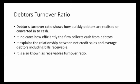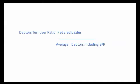Debtors turnover ratio means how easily a particular item can be realized or converted into cash — how efficient it is, how much debtors can be collected into cash. Accounts receivable or receivables. The equation to calculate debtors turnover ratio is: net credit sales divided by average debtors including bills receivable.